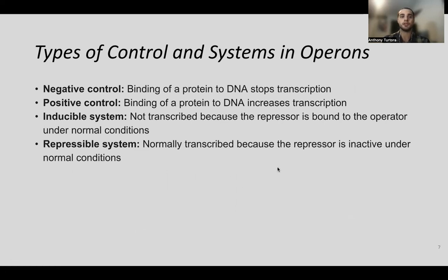The types of control in operons: negative control is when binding of a protein to DNA stops transcription; positive control is when binding of a protein to DNA increases transcription. Inducible systems are not transcribed under normal conditions because the repressor is bound to the operator. Repressible systems are normally transcribed because the repressor is inactive under normal conditions. Prokaryotes have these systems to conserve energy — it takes a lot of energy to make RNA and proteins, so they only make them when needed.